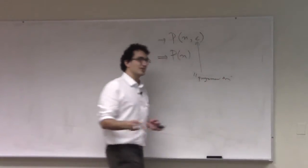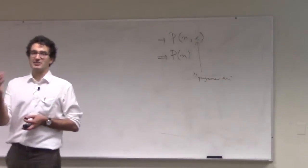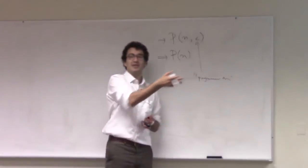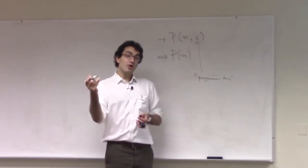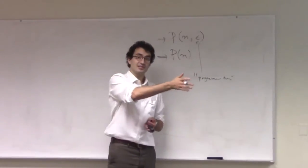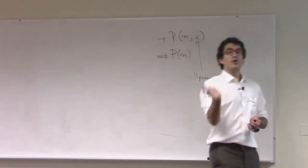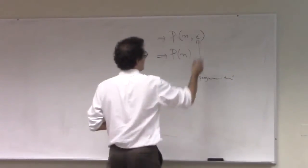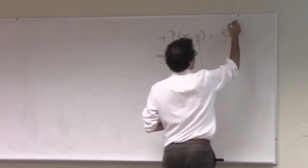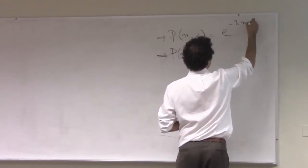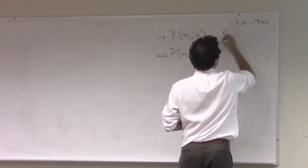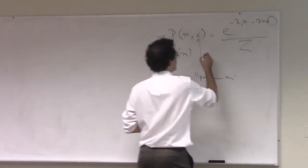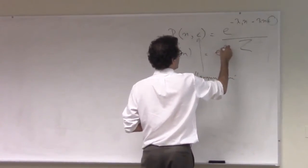We assumed the system was constrained in two ways: constrained not only to having a certain average number of projects per language - we fixed the average popularity of languages - but we also fixed the average programmer time devoted to projects in a particular language. This distribution looks like this in functional form. When we integrate out this variable epsilon, we get something that looks like this.